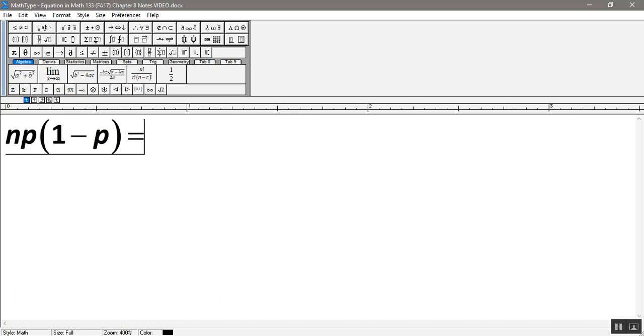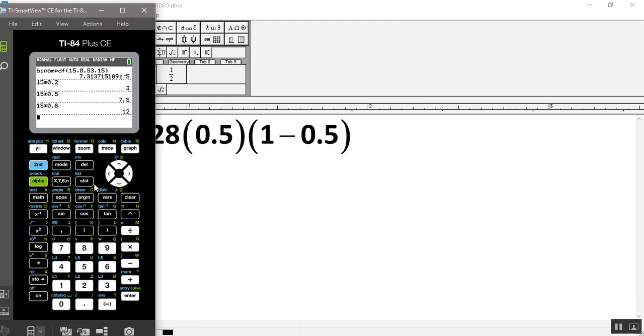times 1 minus 0.5. So let me go grab a calculator. So I'm going to take 28 times 0.5 times 1 minus 0.5, close my parentheses, enter, and I get 7.